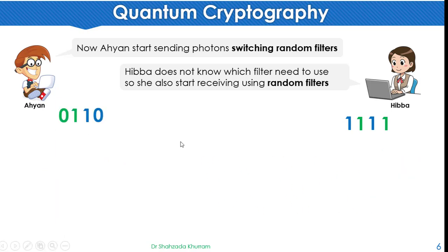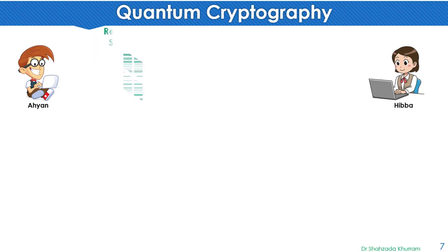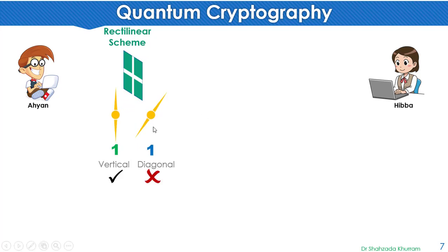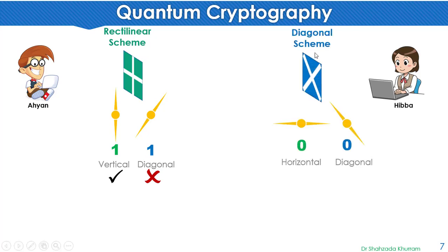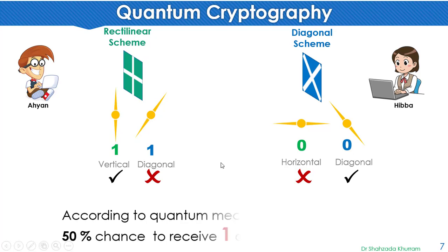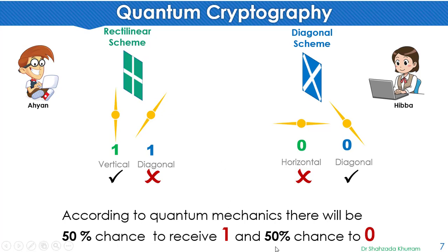For example, the sender has to send 0, 1, 1, 0, but the receiver received 1, 1, 1. According to quantum mechanics, if we send a 1 through a vertical filter or a diagonal filter, and the receiver uses the wrong filter — for example, if a rectilinear filter is used to receive a diagonally sent photon — then there is a 50% chance to receive a 1 and a 50% chance to receive a 0. The same probability applies to both filter schemes.